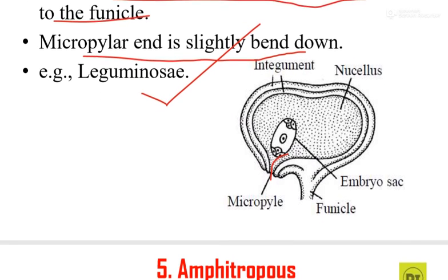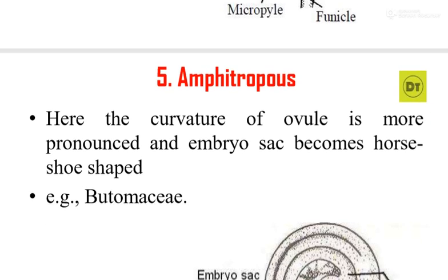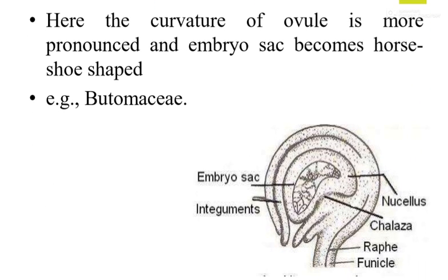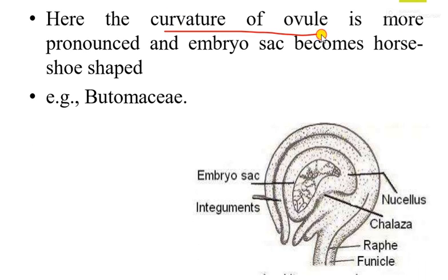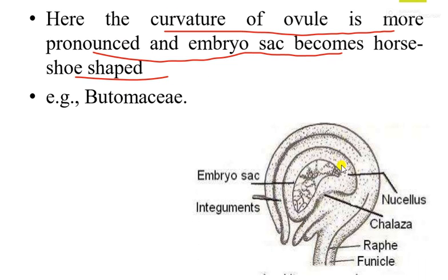Now we will move on to the fifth type of ovule, which is known as amphitropous type. Here, the curvature of the ovule is more pronounced and the embryo sac becomes horseshoe shaped. You can see this curvature is very pronounced. Such a type of ovule is known as amphitropous and it is commonly found in Butomaceae.